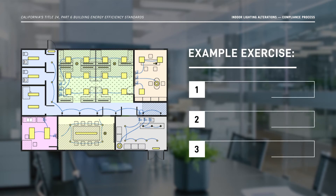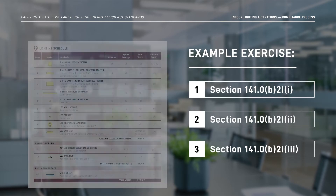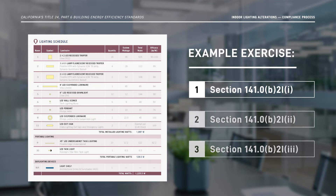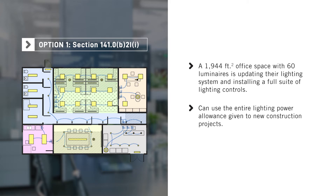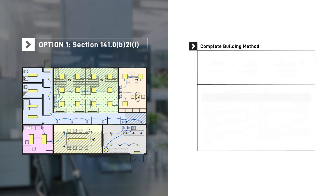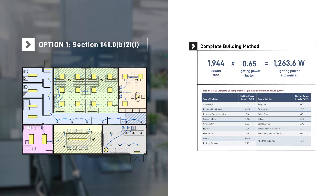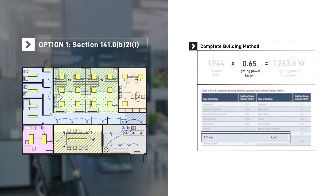Now let's walk through a sample project using each compliance pathway, starting with Option 1. A 1,944 square foot office space with 60 luminaires is updating their lighting system and plans to install a full suite of lighting controls to meet their green building goals. This means they can use the entire lighting power allowance given to new construction projects. For simplicity, the design team decides to use the complete building method to calculate the lighting power allowance. This calculation requires multiplying the square footage of the building by the allowed lighting power factor for that building type found in Table 140.6-B.